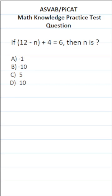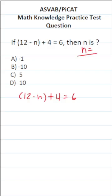This ASFAB Math Knowledge Practice Test question for the ASFAB and PyCat says: 12 minus (n) plus 4 equals 6, then n is. We're going to be solving the equation 12 minus n plus 4 equals 6 for n. We want to get n equal to something by itself.